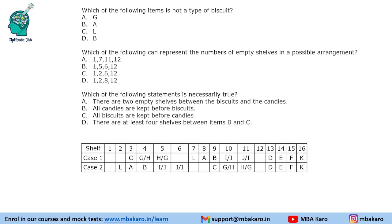Question 2: Which of the following items is not a type of biscuit? The biscuits are L, A, B, I and J. So G is not a type of biscuit — G is a candy.